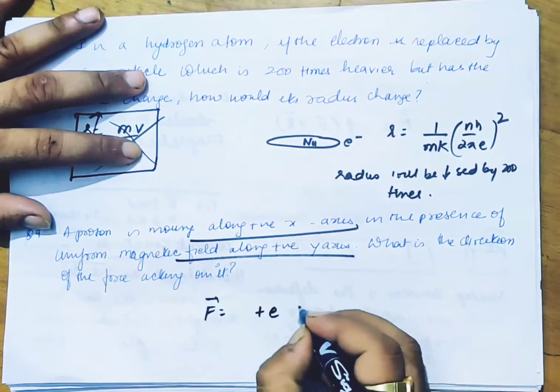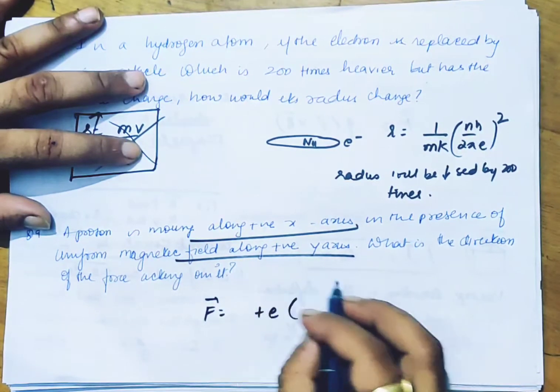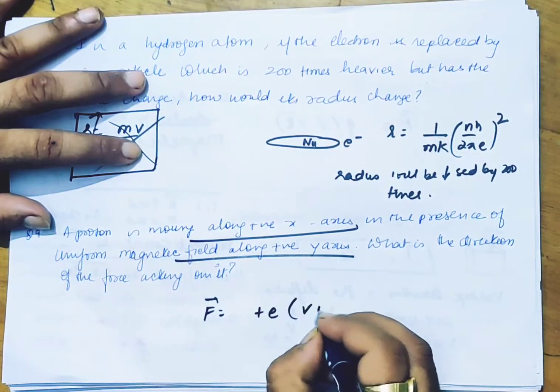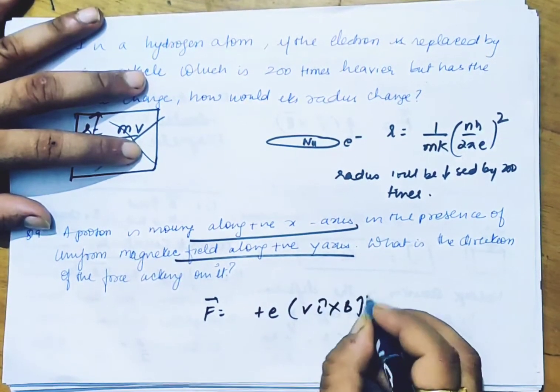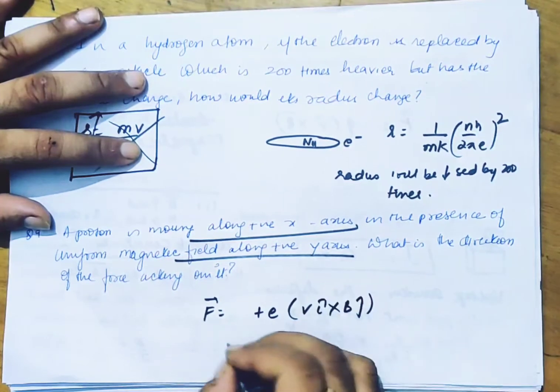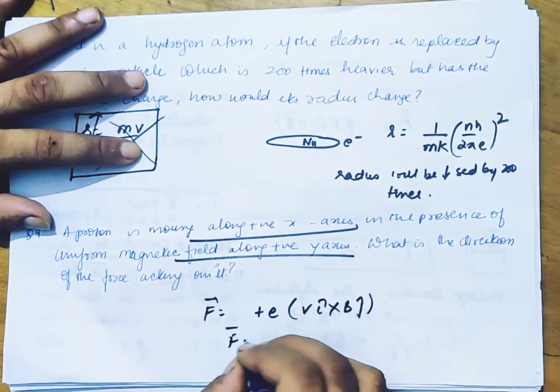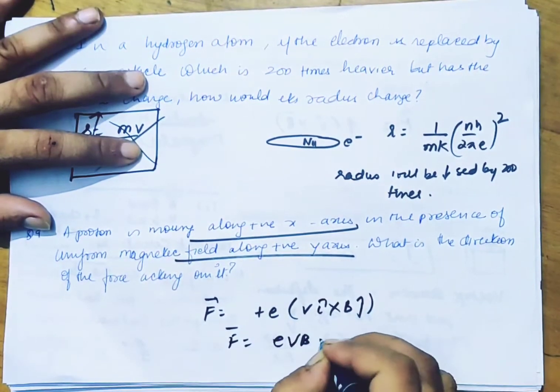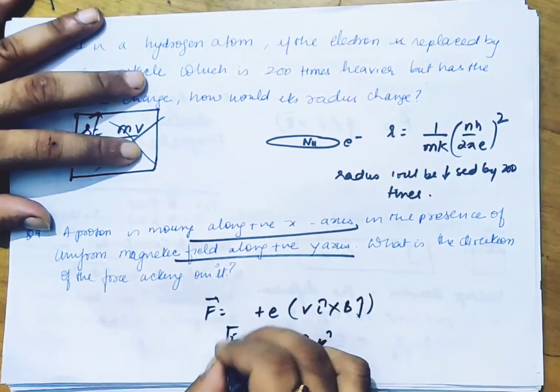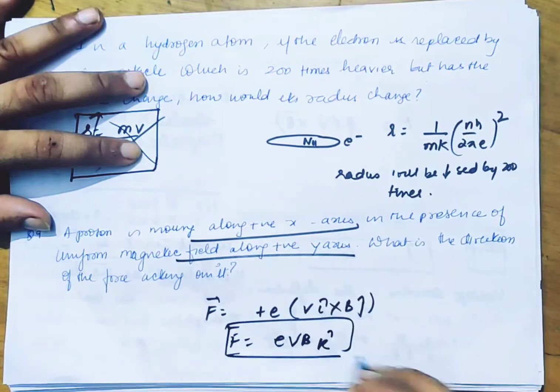The force is F = e·v·î × B·ĵ. Since î × ĵ = k̂, the answer is e·v·B in the k̂ direction.